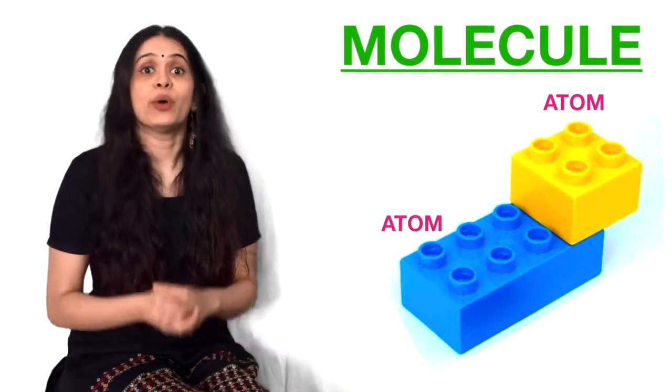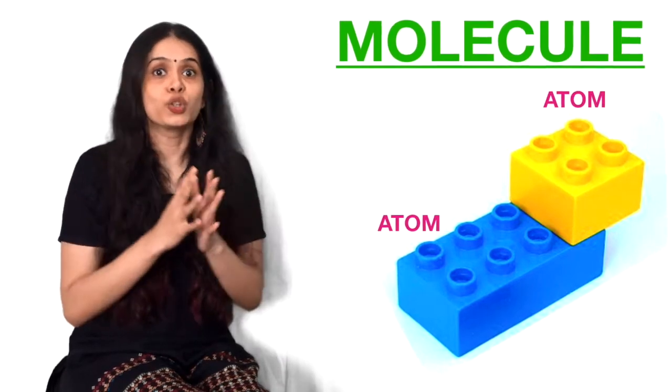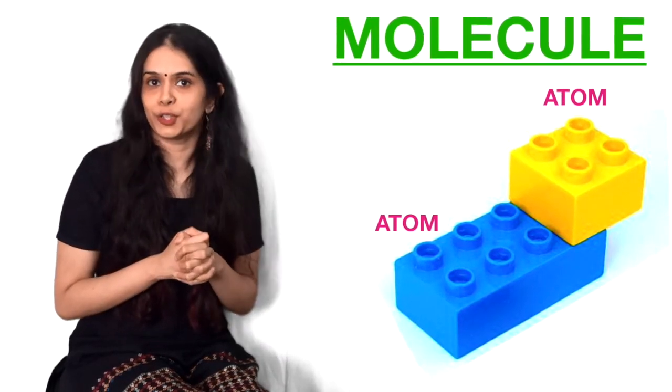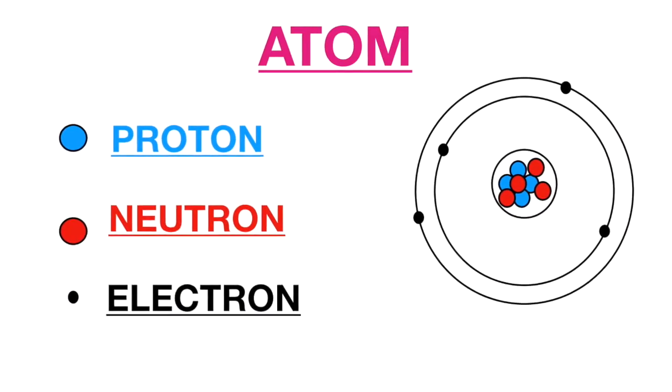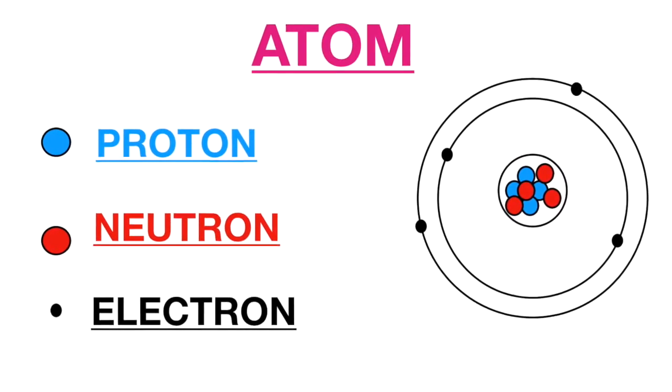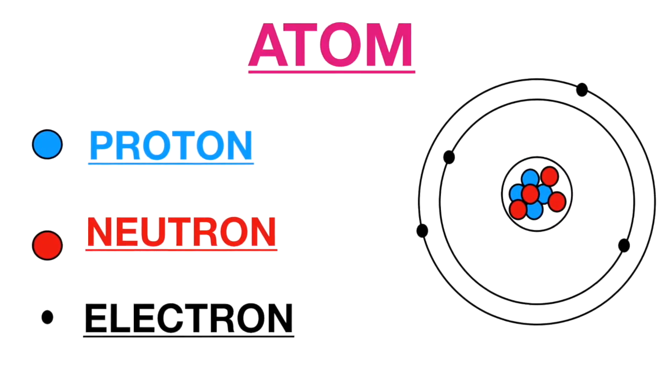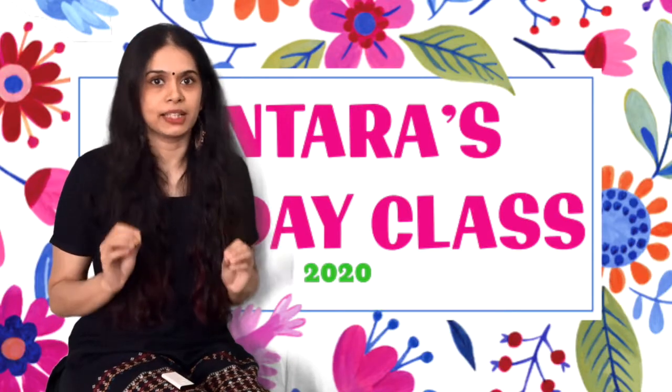Remember we talked about molecules. When two or more atoms join together, they form a molecule. You also know about the atoms, the structure of an atom, protons, neutrons, the shells in which the electrons go around. So yeh sab aapko clearly pata hai. Right?